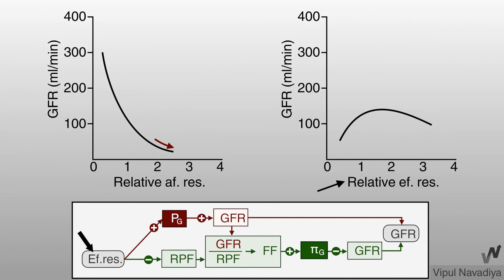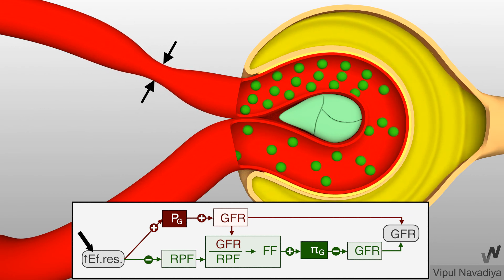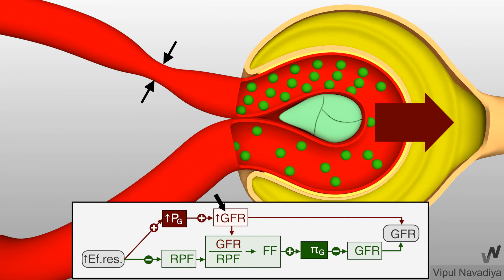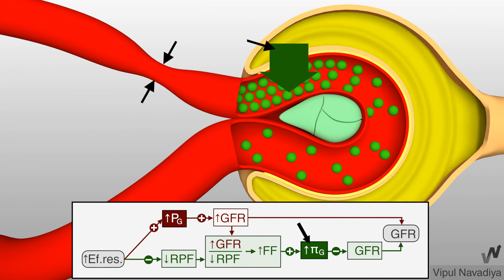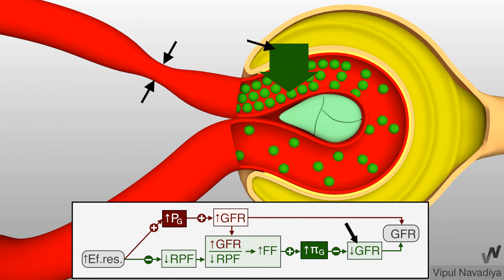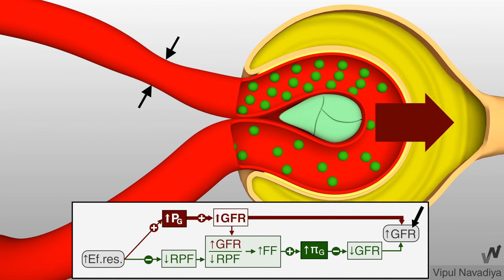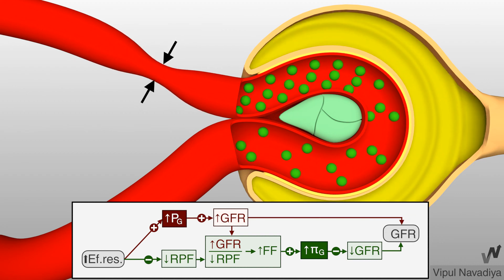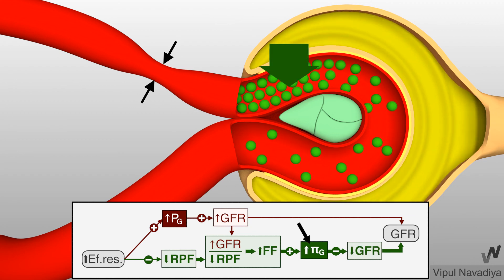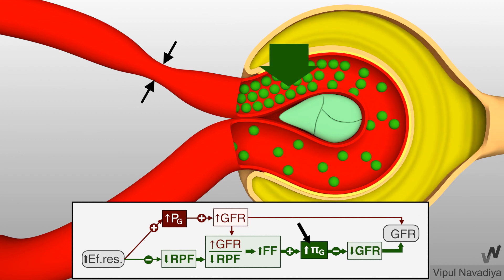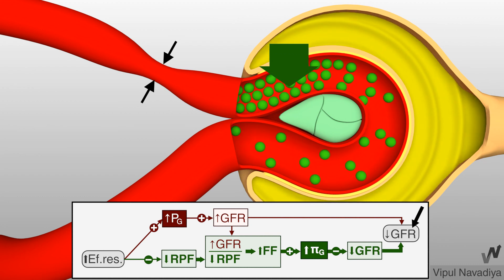Now, the effect of efferent arteriolar resistance: rising efferent arteriolar resistance initially causes rising GFR, whereas at very high resistance GFR starts to fall. Rising efferent arteriolar resistance causes an increase in hydrostatic pressure, which tends to increase GFR. However, it also causes an increase in colloid osmotic pressure, which tends to decrease GFR. Initially, when resistance is in the lower range, the effect of rising hydrostatic pressure dominates, so GFR increases. But when resistance is too high, blood flow becomes very slow, leading to massive accumulation of proteins and a massive increase in colloid osmotic pressure, so its effect predominates and GFR falls.